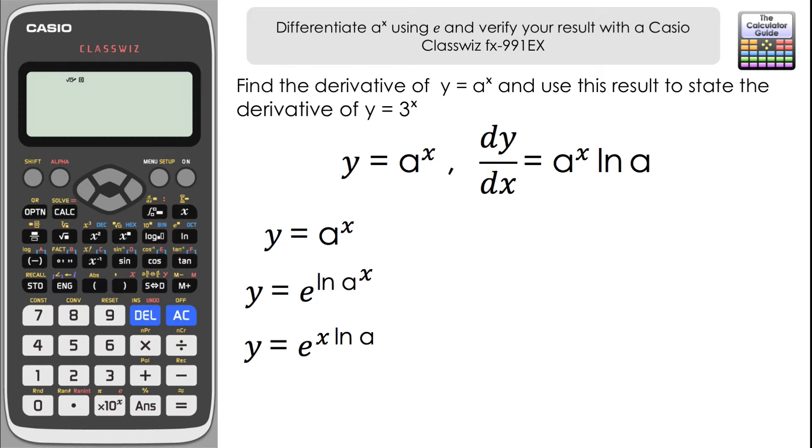So now we're ready to differentiate and find dy by dx. We should know that the properties of e means that the derivative is the function itself, so e to the x natural logarithm of a is going to be the derivative, but we need to employ the chain rule as well in this particular case because we've not just got e to the x, we've got e to the x multiplied by the natural log of a. Now the natural log of a will just be a number. We don't know what that is, but it would just be a value.